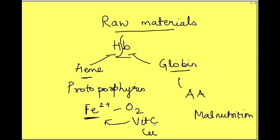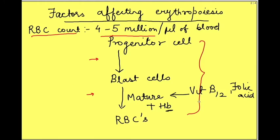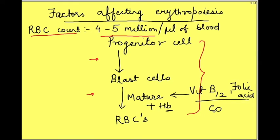It ensures transport of iron and its uptake by erythroblast. Cobalt is required here because cobalt is a cofactor for cyanocobalamin which is the active component of vitamin B12.